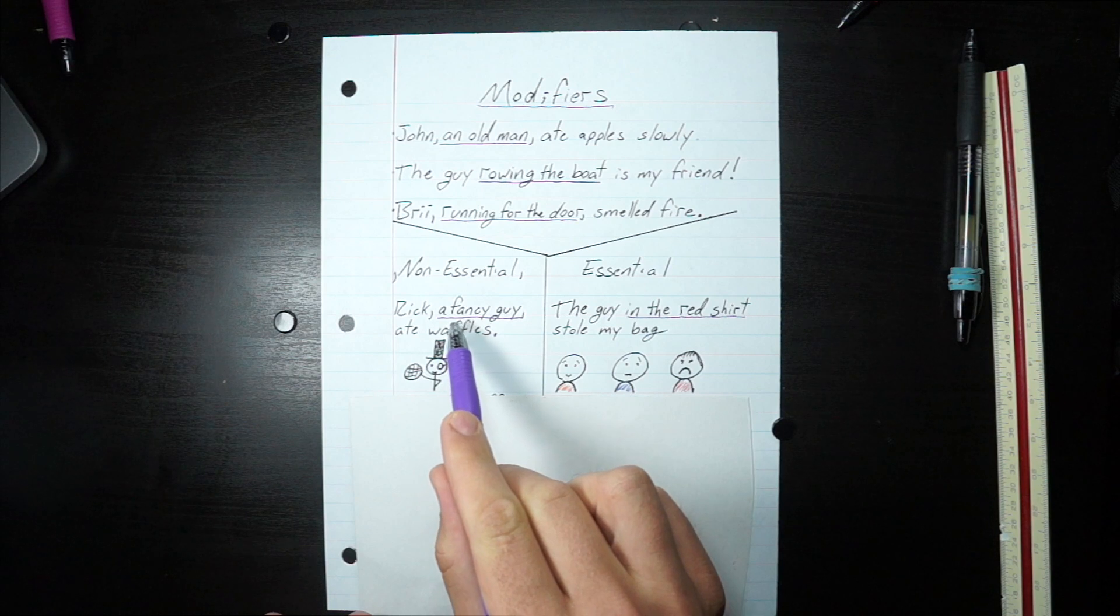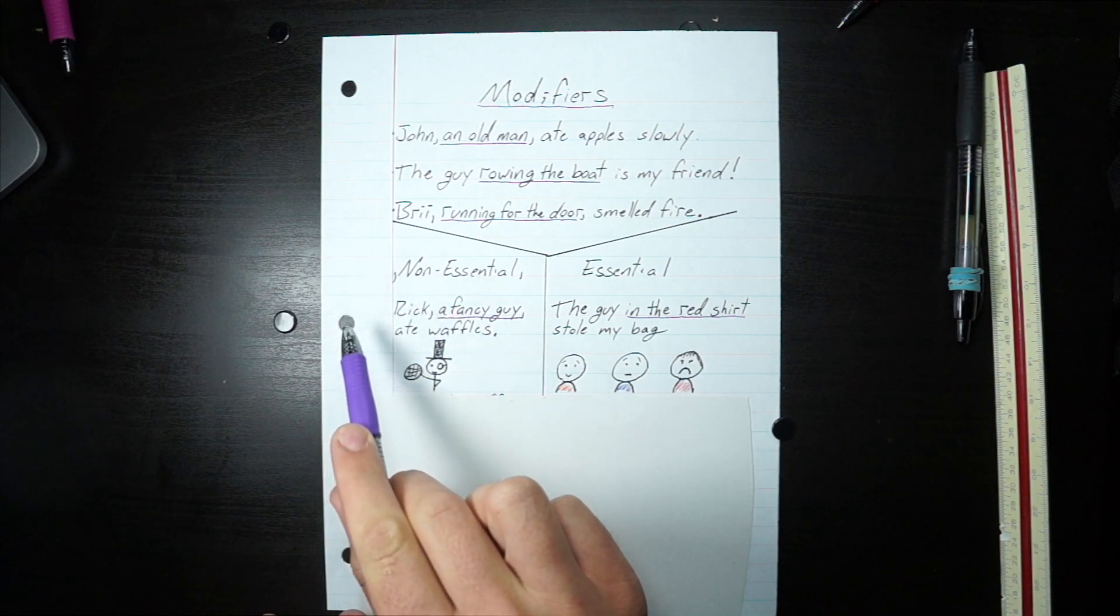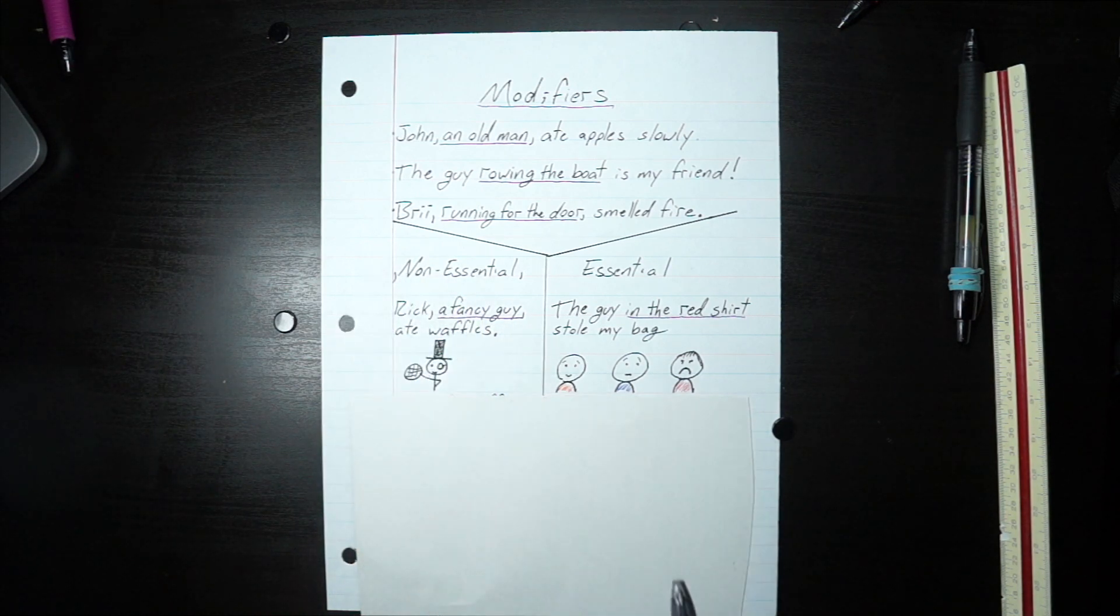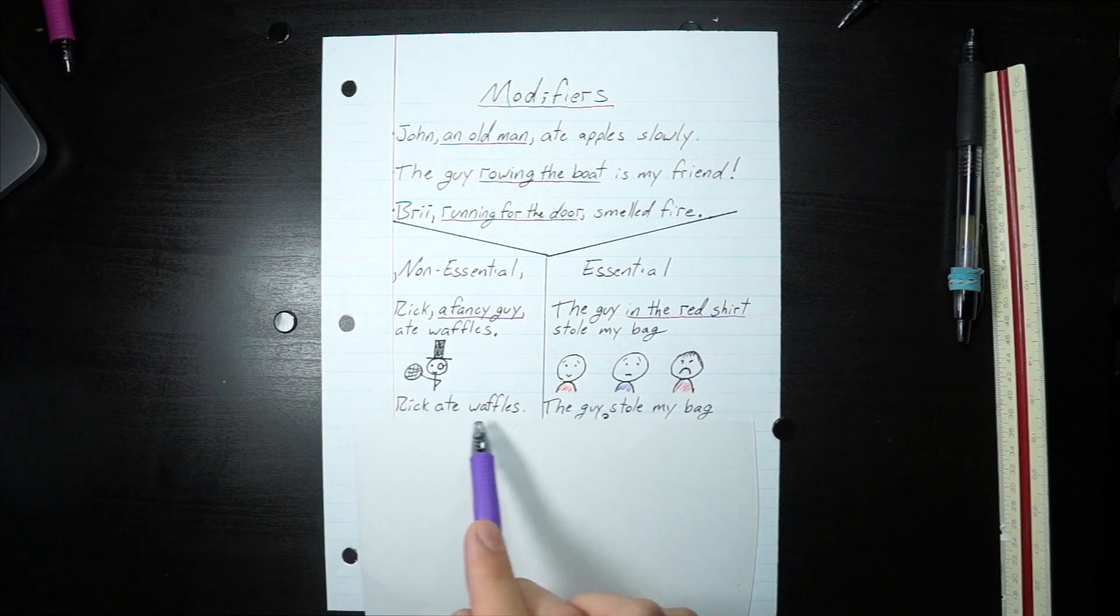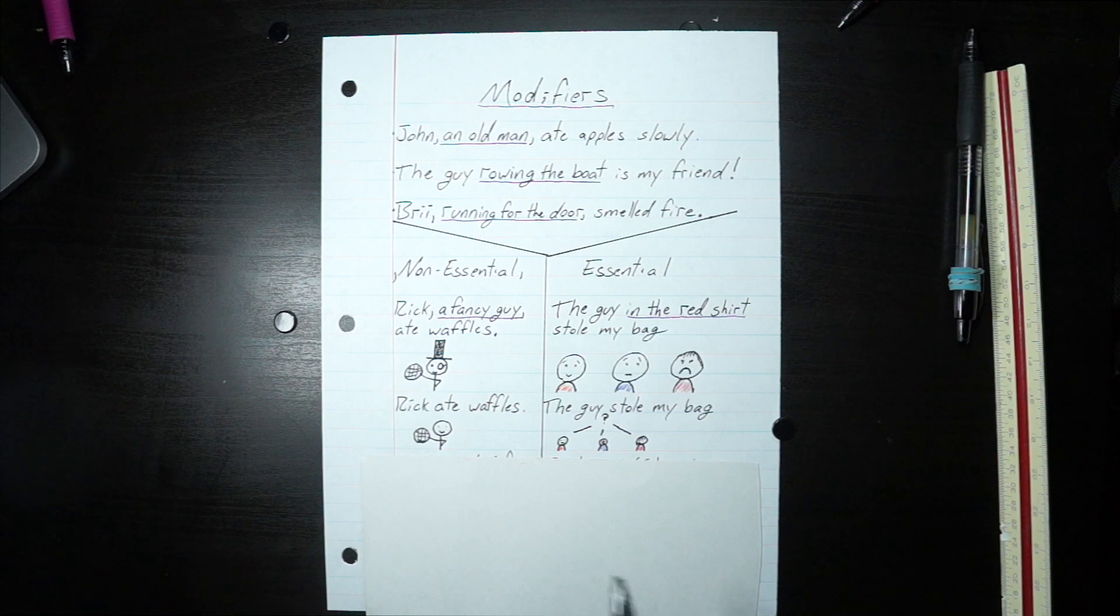So if it has commas around it, that means you can take it out of the sentence and the sentence still works. That's the beauty of a non-essential modifier. Rick ate waffles. Yeah, that still works. Although that isn't the rich information we had about Rick before, it's still Rick ate waffles. We're still good to go.